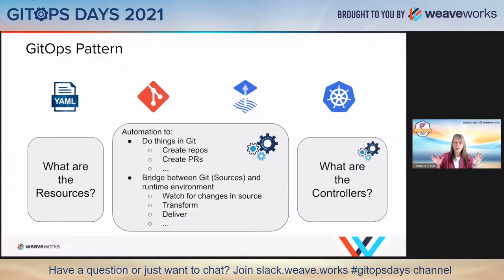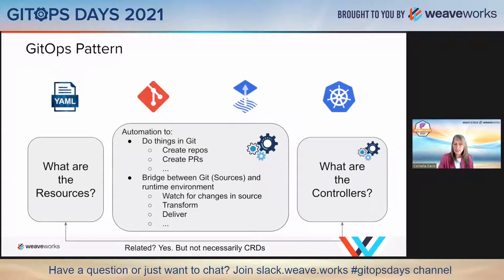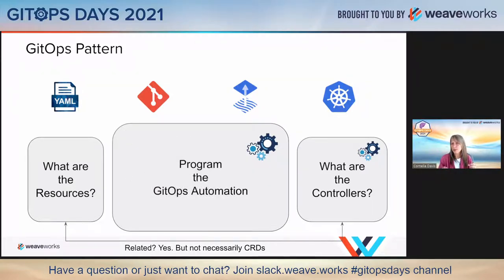Controllers play an important role across this entire lifecycle. To GitOps all the things, you need to answer: what are the resources, and what are the controllers acting on those resources? These are related but not necessarily CRDs — they can be loosely coupled. The other thing you need is to program the GitOps automation for this particular lifecycle. To GitOps all the things, I need to answer the questions on the bookends and program the middle.